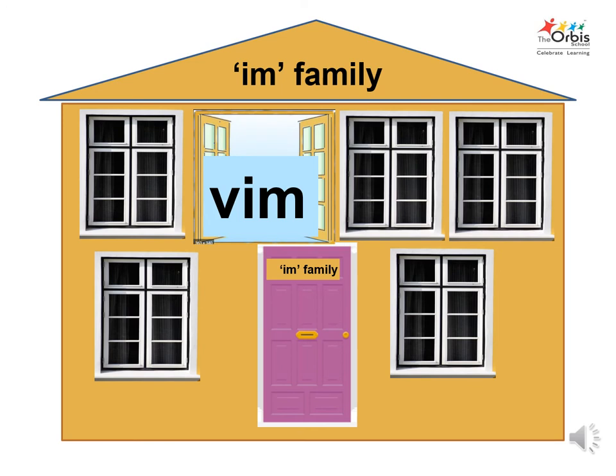Now, let's find the name of the second family member living in the house. The phonics sound of V is V. Combine the sound of V with the sound of M to get the name of the person inside the window. That is, Vim. Say hello to Vim.